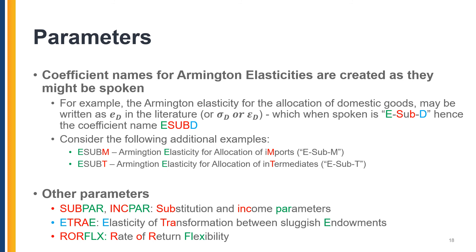The most common type of parameter is Armington elasticities. For example, the Armington elasticity for the allocation of domestic goods may be written in the literature as an E subscripted by D, which once spoken is ED — hence the coefficient name ED. EM is the Armington elasticity for the allocation of imports. ET is the Armington elasticity for the allocation of intermediates. Other parameters are also written as they might be spoken: Subpar and Incpar are substitution and income parameters. ETray is the elasticity of transformation between sluggish endowments. Roarflex is the rate of return flexibility parameter.